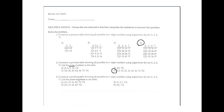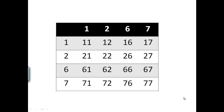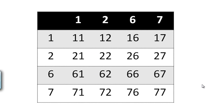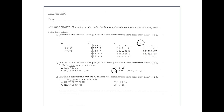Number 3 uses the same product table again, but now determine the prime numbers. The prime numbers are: 11 is prime, 17 is prime, 61 is prime, 67 is prime, and 71 is prime. These are all the prime numbers inside the product table, so the final answer is option C.